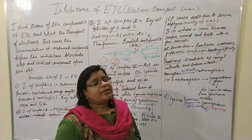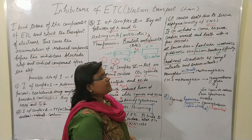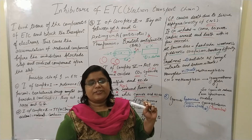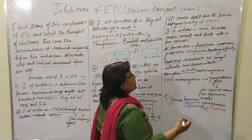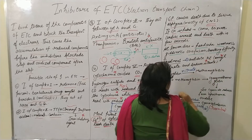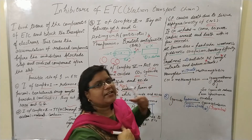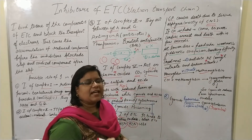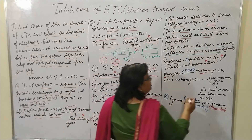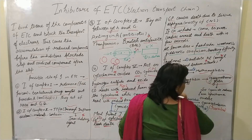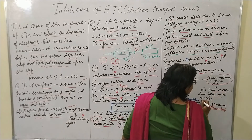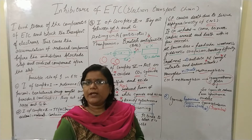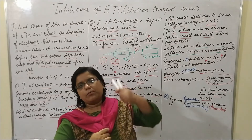For treatment, the antidote kit contains amyl nitrate and sodium nitrate. These nitrates convert hemoglobin into methemoglobin. When cyanide reacts with methemoglobin, it produces cyanomethemoglobin, which causes the cyanide to be released from the cytochrome oxidase, freeing it.